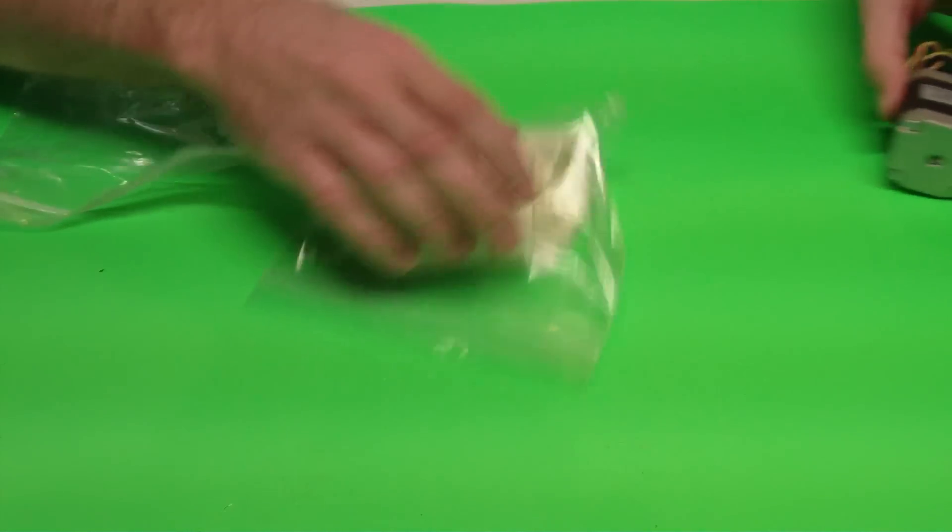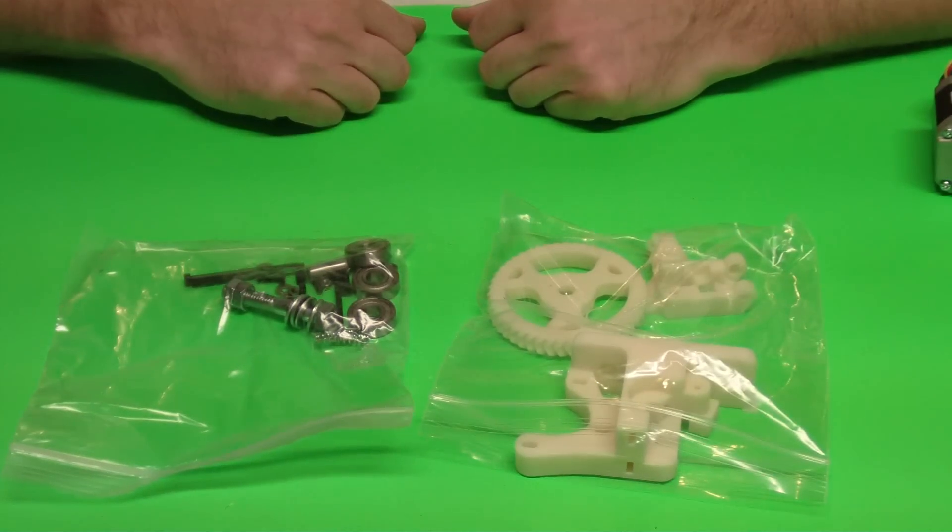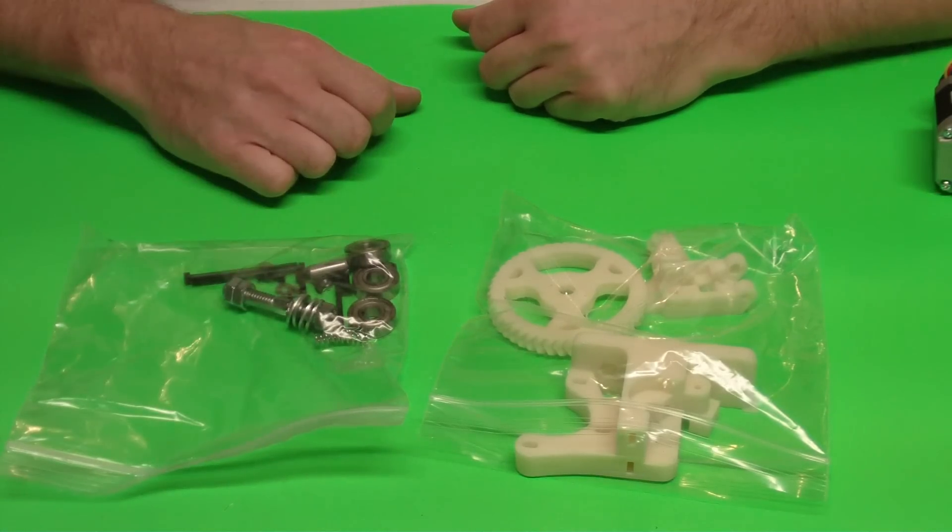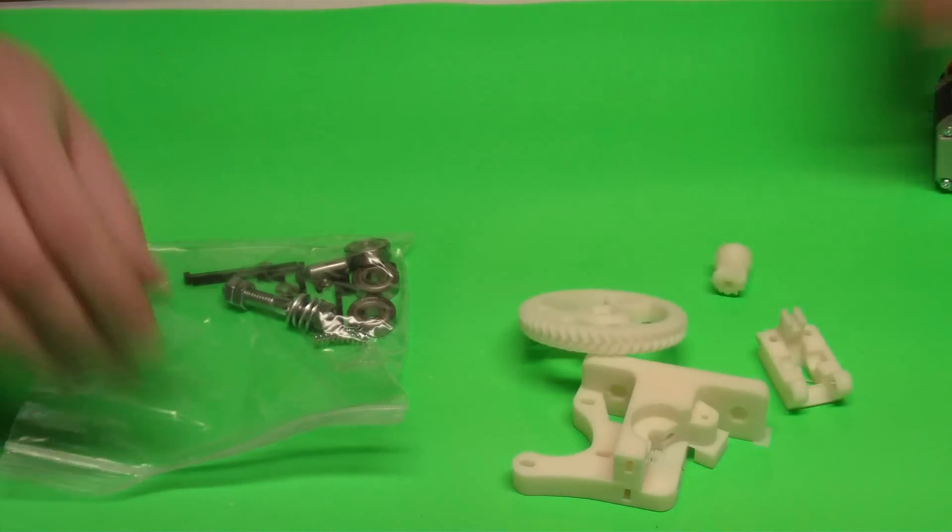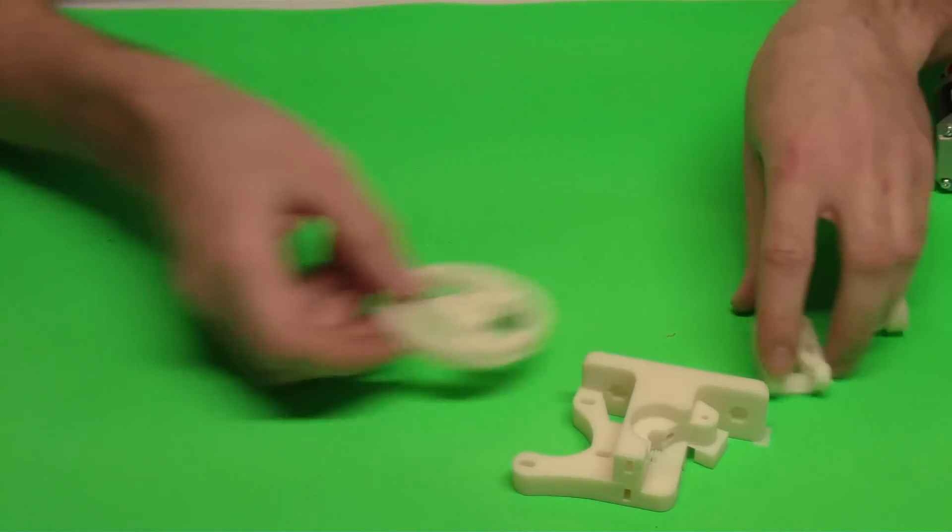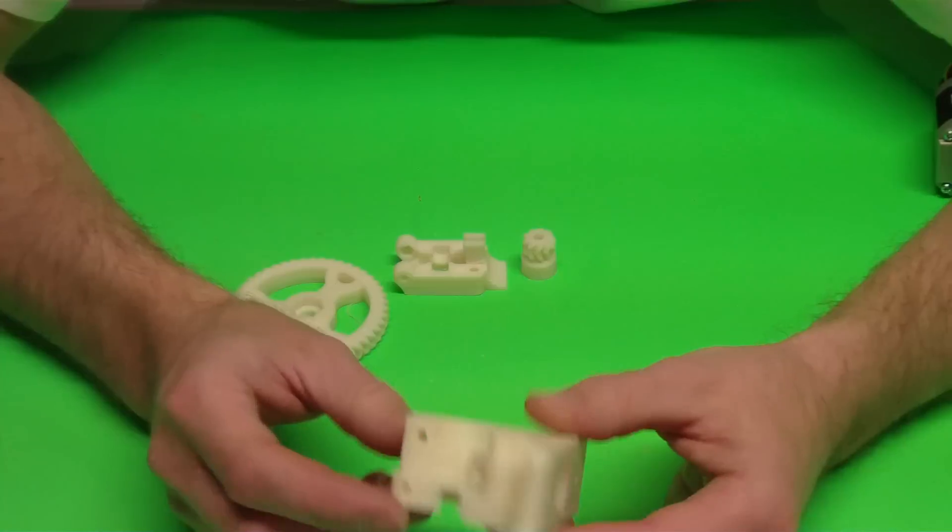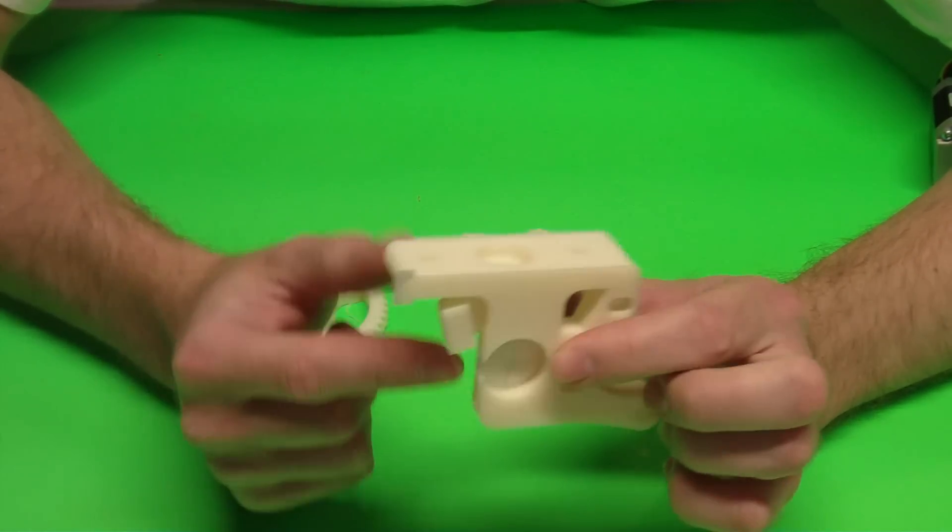You're also going to get your printed parts for your extruder and then your extruder hardware. If you bought the full kit, it's all going to come in a bigger bag. First thing we're going to do is clean up some parts. There's a few parts that have pieces on them that are built on there just for printing purposes.